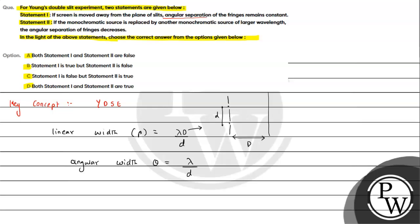Angular width theta depends on lambda by d. For statement one: if the screen is moved away from the plane of slit, the angular width theta equals lambda by d — there is no D in this formula, so angular separation remains constant. That is true.